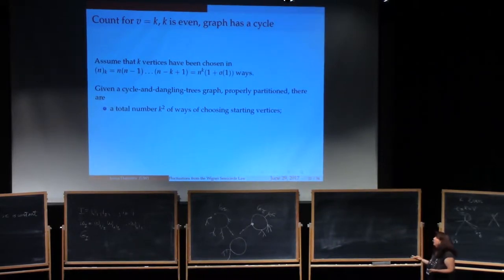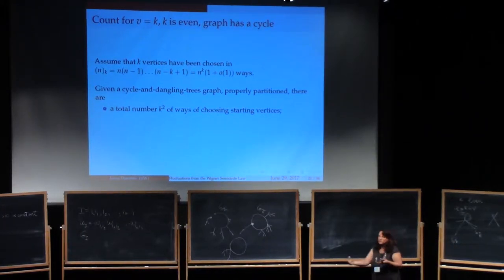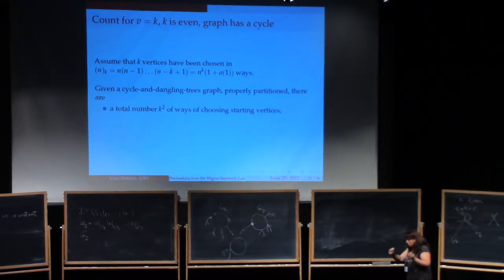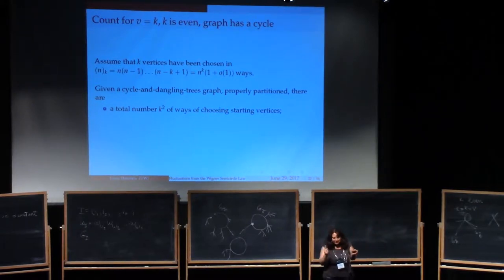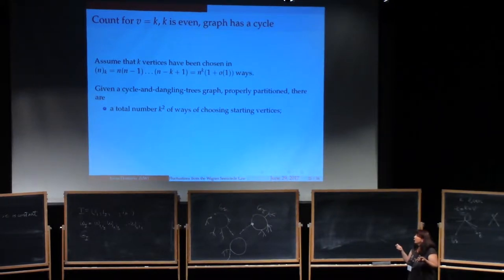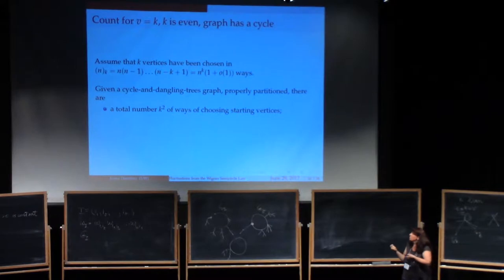Moreover, you will be able to pick the labels on these graphs in n to the k ways, because k is v. And given a cycle and dangling trees graph properly partitioned, there are a total number k squared of ways of choosing starting vertices. So remember that we're looking at wi and wj. wi encoded in it is the starting vertex where you start doing your walk. That will have to be one of the k vertices available. And it's the same thing for wj. You'll have to pick one of the k vertices available to do the walk. So that gives you a total of k squared ways of choosing starting vertices.